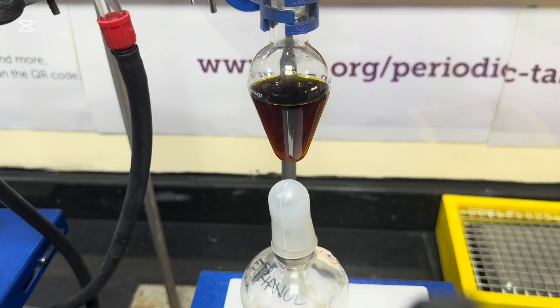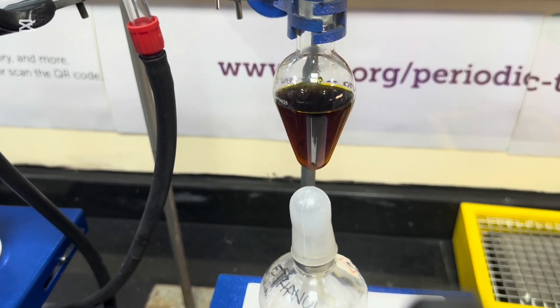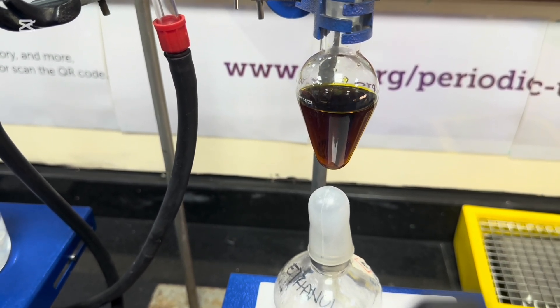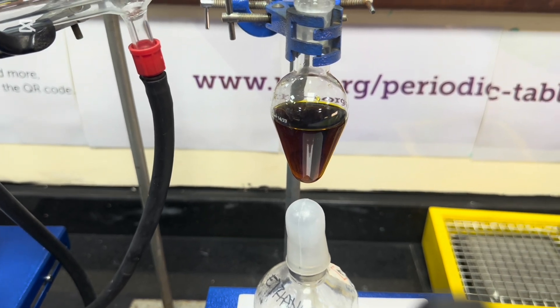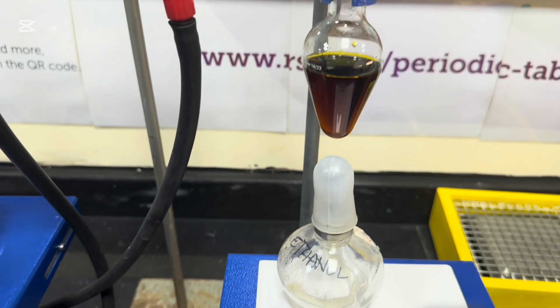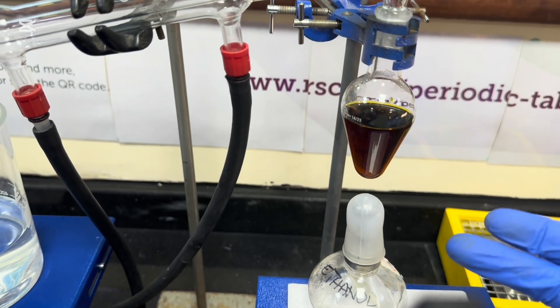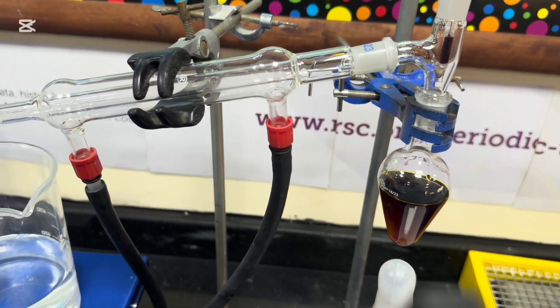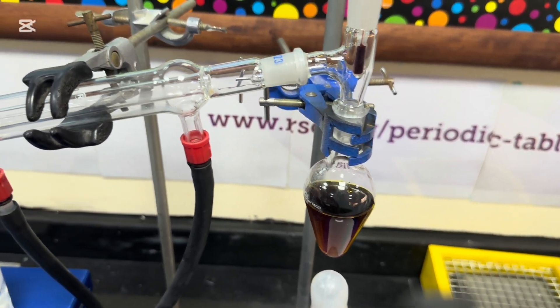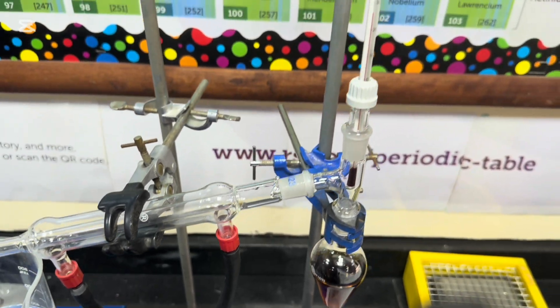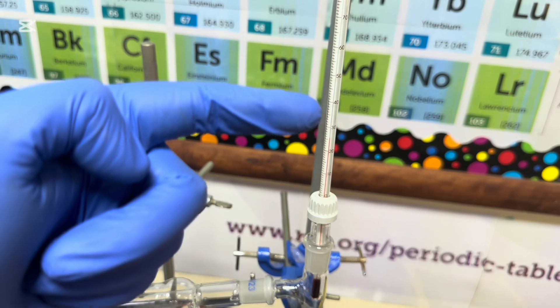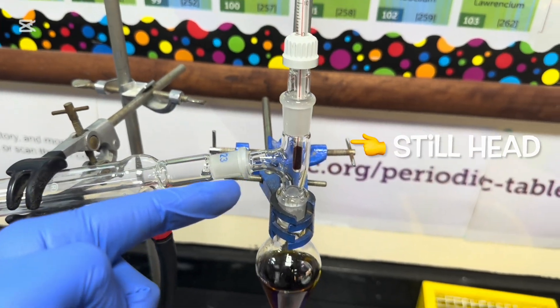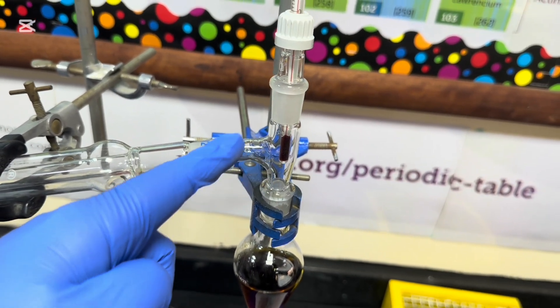So what I've now done is I've removed the ice water bath and I allowed the pear-shaped flask to warm to room temperature, which took around about 5 minutes. And what I'm now going to do is I'm going to light a burner underneath the flask and heat very gently with a small flame. Now this pear-shaped flask is connected to a still head, which has a thermometer connected to it. So I can measure any boiling point of the vapours that are condensing.